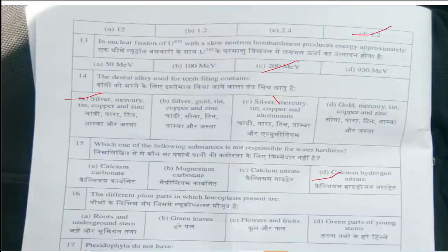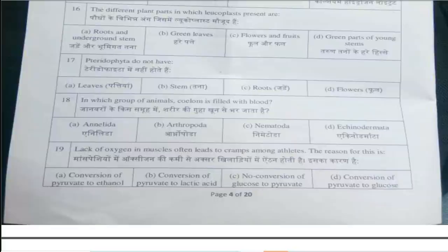Sixteenth question is: The different plant parts in which Leucoplast are present? The answer is option A, Roots and Underground Stem. Seventeenth question is: Pteridophyta do not have — answer is option D, Flowers. Eighteenth question is: In which group of animals is the coelom filled with blood? The answer is option B, Arthropoda.